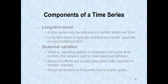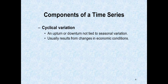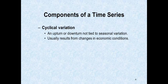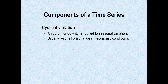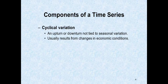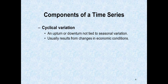The two components we're not so good at are cyclical variation and random effects. Cyclical variation is like the economy — it goes up and it goes down. If we're forecasting sales and the economy hits a recession, that downturn isn't related to what we're doing internally; it's outside of us. Cyclical variation is an upturn or downturn not tied to seasonal variation but usually tied to changes in economic conditions — recessions, inflationary periods, or depressions.